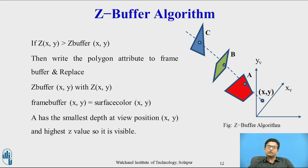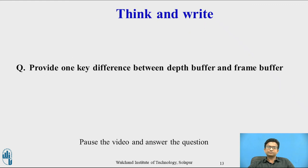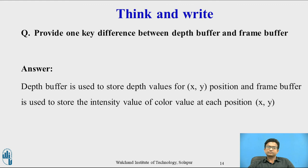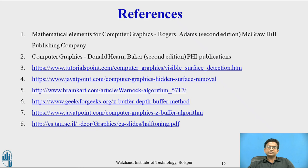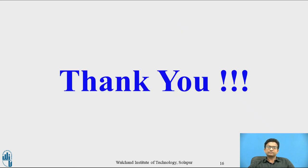This is how we identify visible lines and visible surfaces using the Z-buffer algorithm. Here you can pause the video and answer the question: provide one key difference between depth buffer and frame buffer. The answer is: the depth buffer is used to store depth values for x, y positions, while the frame buffer is used to store the intensity value of color at each pixel position (x, y). These are the references used to create this video. Thank you.